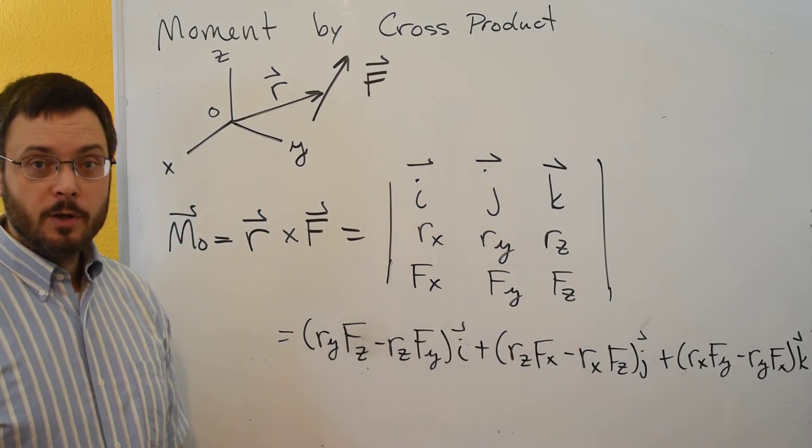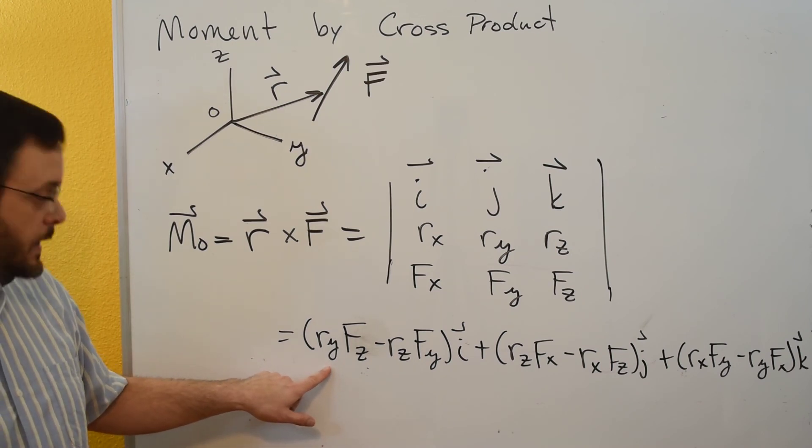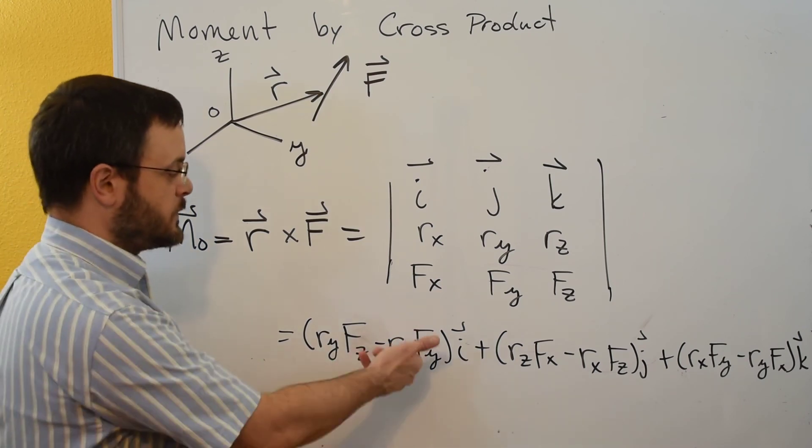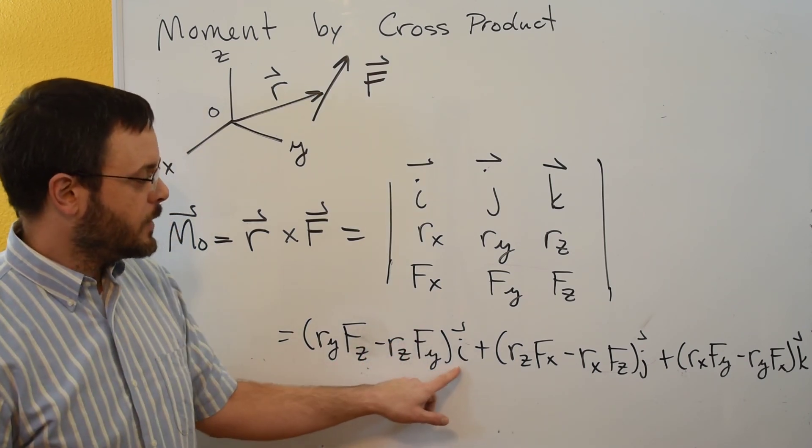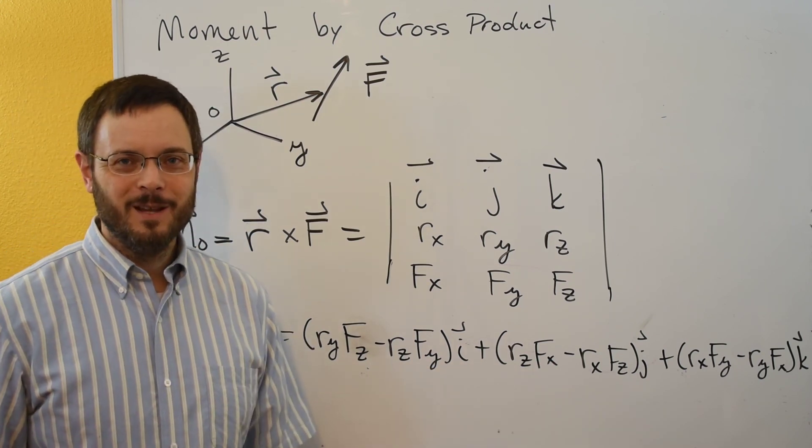If you prefer the equation—remember it gives you exactly the same result—you can calculate the moment as Ry times Fz minus Rz times Fy. That gives you the i component, and so forth. Thanks for watching!